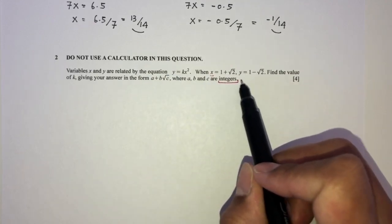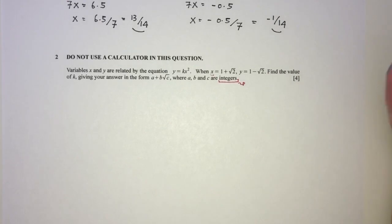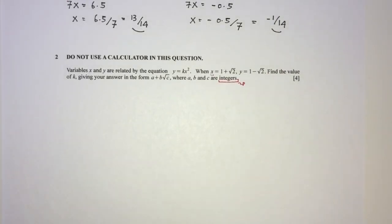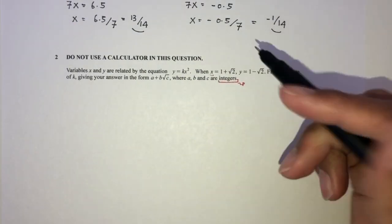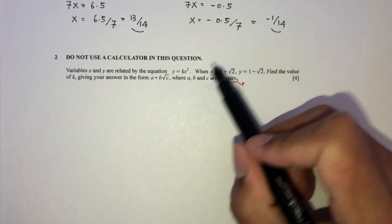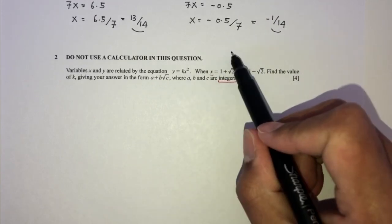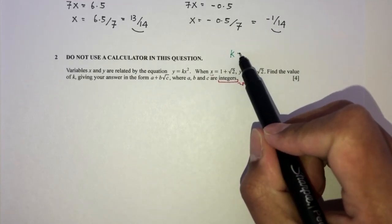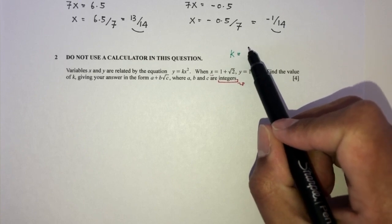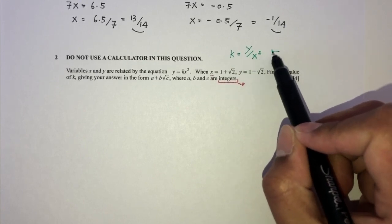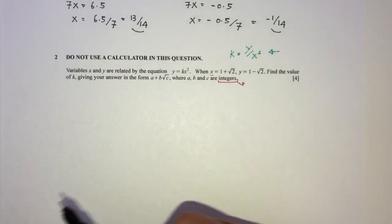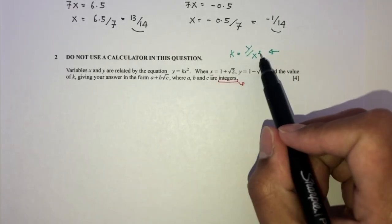Integers are whole numbers — such as minus 1, 1 — they can be negative or positive but must be whole numbers. By observing this, to find the value of k, I can make k the subject by dividing by x squared on both sides, so you will have y over x squared. Take y, divide by x squared. So let's first find x squared.